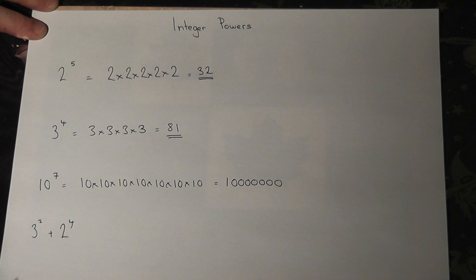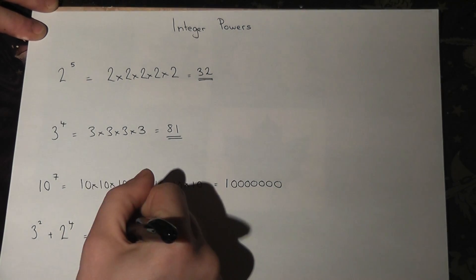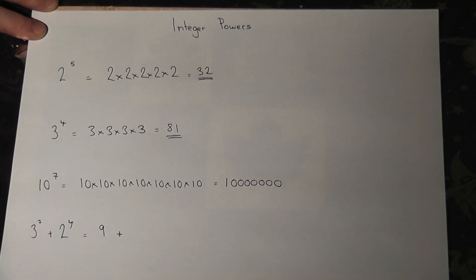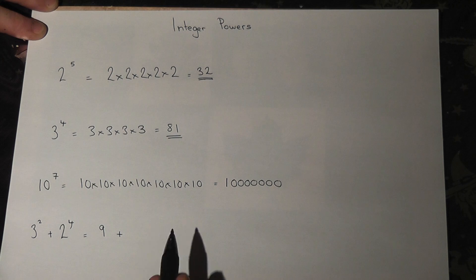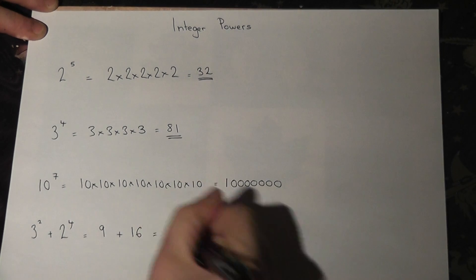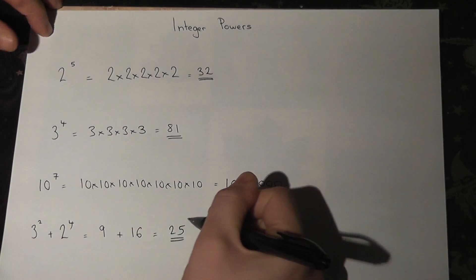The final example is an addition of two separate powers. The trick here is to work both out separately. So 3 squared is 3 times 3, which is 9. 2 to the power of 4: 2 times 2 is 4, times 2 is 8, times 2 is 16. So it's 9 plus 16, which equals 25.